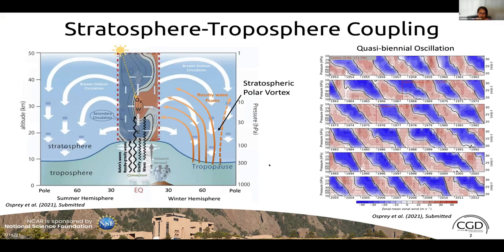Amy focused on the stratospheric polar vortex; I will spend the introduction talking about the QBO, the quasi-biennial oscillation. This oscillation is most visible in the stratospheric zonal mean wind. What I'm showing here is a time series from observations with alternating easterly and westerly winds in the tropics. This oscillation is quite regular and therefore very predictable — the period ranges from about 24 to 32 months, compared to sudden warmings which can only be predicted about two weeks ahead.